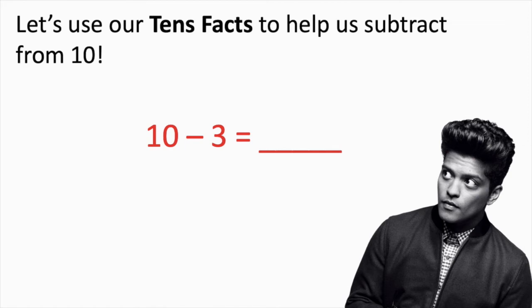Write this number sentence with me. 10 minus 3 equals... I bet some of you know what 10 minus 3 is in a snap, because you know an addition fact that's related. What is 10 minus 3? That's right. It's 7. Some of you drew a quick picture like this. Others knew that 3 and 7 made 10. So they used that to help them figure out that 10 minus 3 is 7.